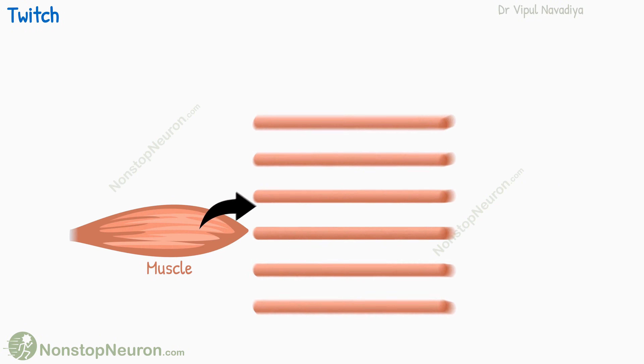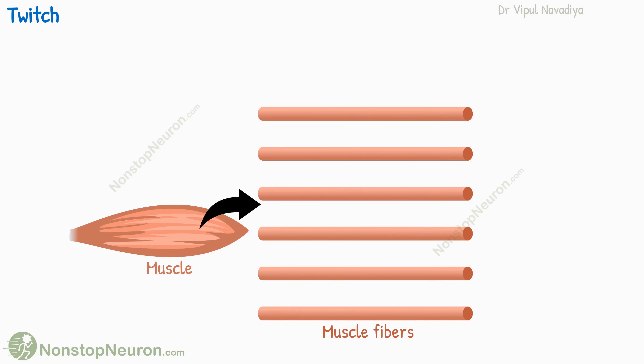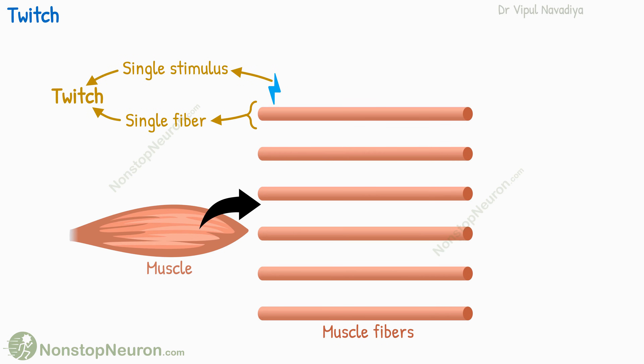A muscle has multiple muscle fibers. The contraction of a single muscle fiber by a single stimulus is called a twitch. It's the smallest unit of muscle contraction. Being very small, an individual twitch is very weak. To increase the total force of contraction, multiple twitches need to be added together. There are two ways by which this addition can happen.